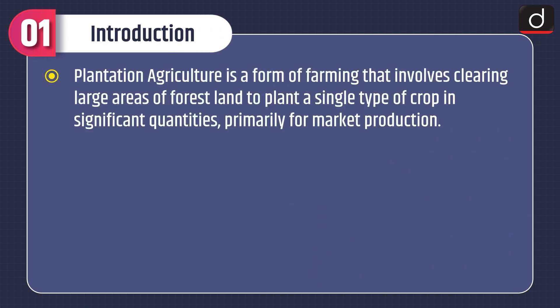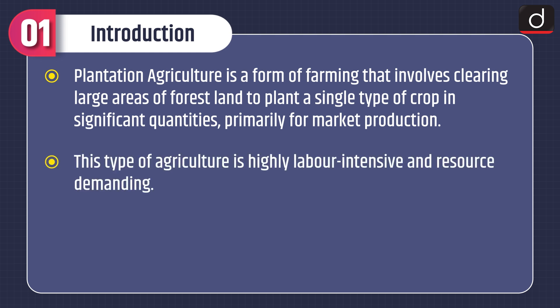Moving on to the introduction of the topic: Plantation Agriculture is a form of farming that involves clearing large areas of forest land to plant a single type of crop in significant quantities, primarily for market production. This type of agriculture is highly labor-intensive and resource-demanding.